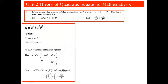To evaluate α³β² + α²β³, we take α²β² as common factor, leaving (α + β). So this equals α²β²(α + β) = (αβ)²(α + β). Replacing values: αβ = n/l, so (αβ)² = n²/l², and α + β = -m/l. Therefore, α³β² + α²β³ = (n²/l²) × (-m/l) = -mn²/l³.